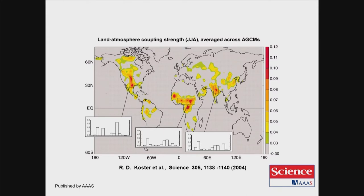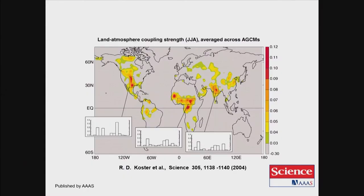Thirty years after that, work by Randy Koster from NASA, using an aggregate of atmospheric general circulation models, identified regions that are hot spots for the coupling between the land surface and the atmosphere. That study confirmed that the Sahel region is actually one of the major areas where that coupling takes place. It's a phenomenon that largely happens at transition regions — where you have transitions from deserts into grasslands, savannas, forests, and oceans. Those transitional regions are now recognized as places of significant coupling. And before all these AGCMs, Charney in his 1975 paper had already identified the Sahel.